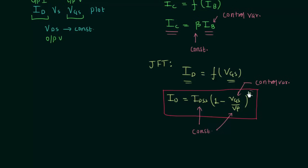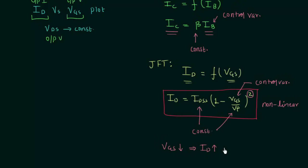This equation is non-linear because of the square term. If you decrease VGS — make it more negative — the drain current ID will increase, and that increase is exponential. So there is an exponential increment in drain current as you decrease the gate-to-source voltage VGS.